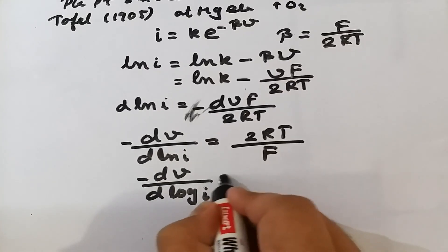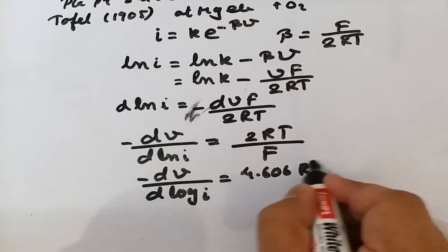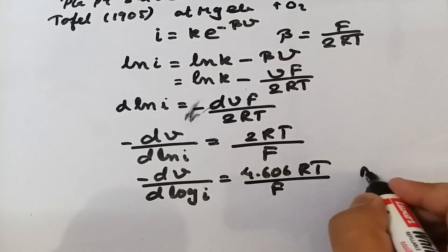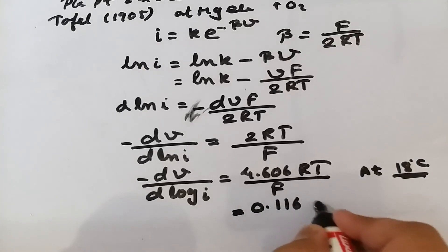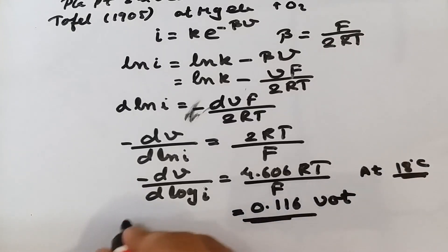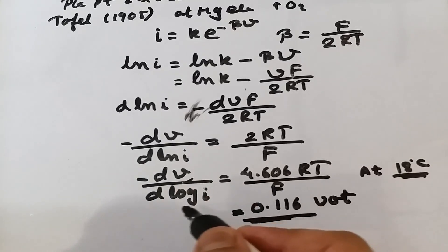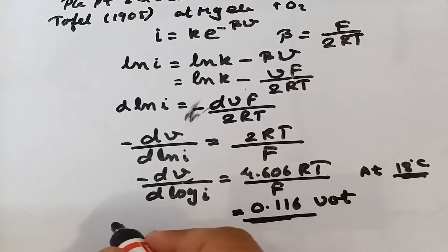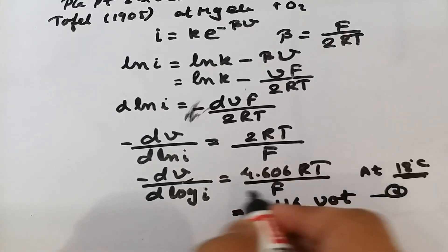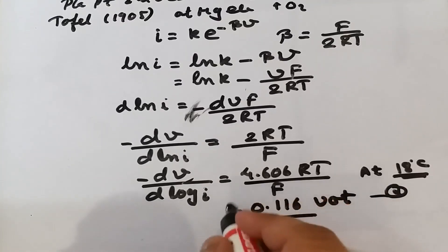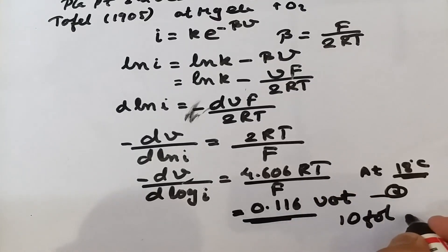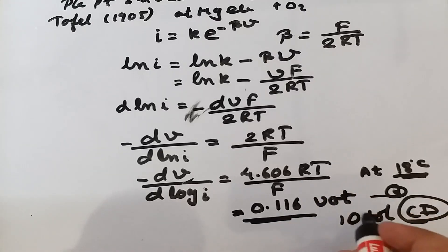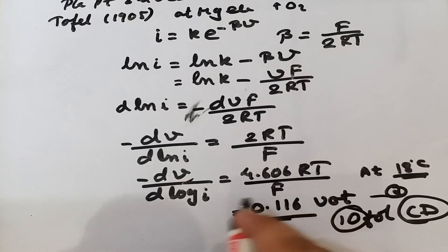Converting ln to log, we get: −dV / d·log(i) = 4.606 RT / F. At 18°C, the value of this expression is 0.116 volts. This means the cathode potential becomes 0.116 volts more negative for each 10-fold increase in current density.